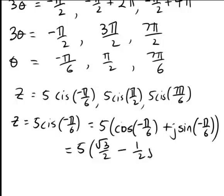So that'll be 5 × √3/2 - 1/2 j, meaning that that one simplifies to become 5√3/2 - 5/2 j for the first of our cube roots.